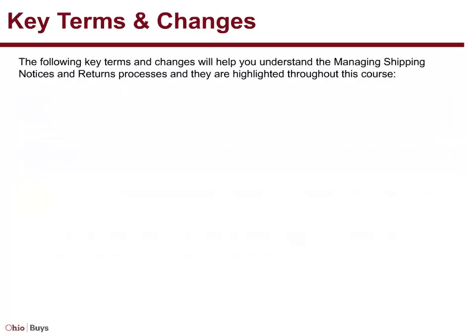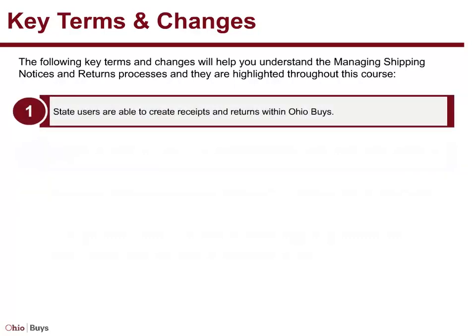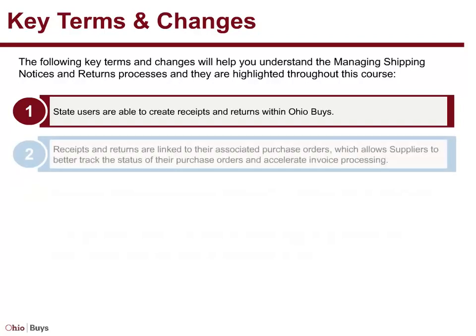The following key terms and changes will help you understand the Managing Shipping Notices and Returns processes, and they are highlighted throughout this course. State users are able to create receipts and returns within OhioBuys. Receipts and returns are linked to their associated purchase orders, which allows suppliers to better track the status of their purchase orders and accelerate invoice processing.